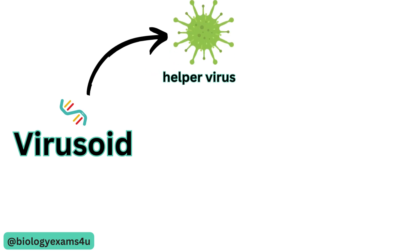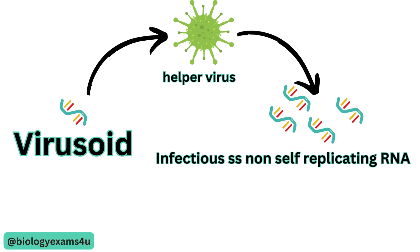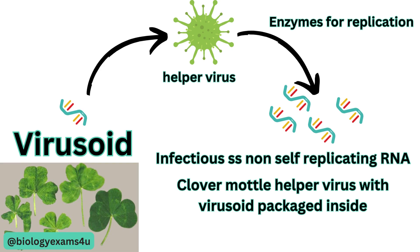The next subcellular agent is the virusoid. Virusoids are similar to viroids — they are single-stranded RNA molecules — but virusoids are dependent on a helper virus for replication and encapsulation, making them non-replicating pathogenic single-stranded RNAs. Helper viruses can replicate on their own and provide the virusoid with the proteins and enzymes needed for its replication. An example is the subterranean clover mottle virus, which has an associated virusoid packaged inside the viral capsid. A virusoid genome does not code for any proteins but serves only to replicate virusoid RNA.